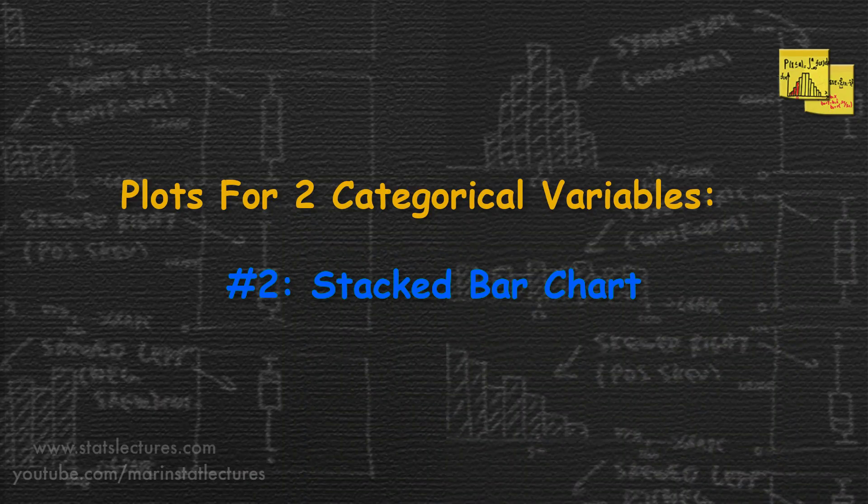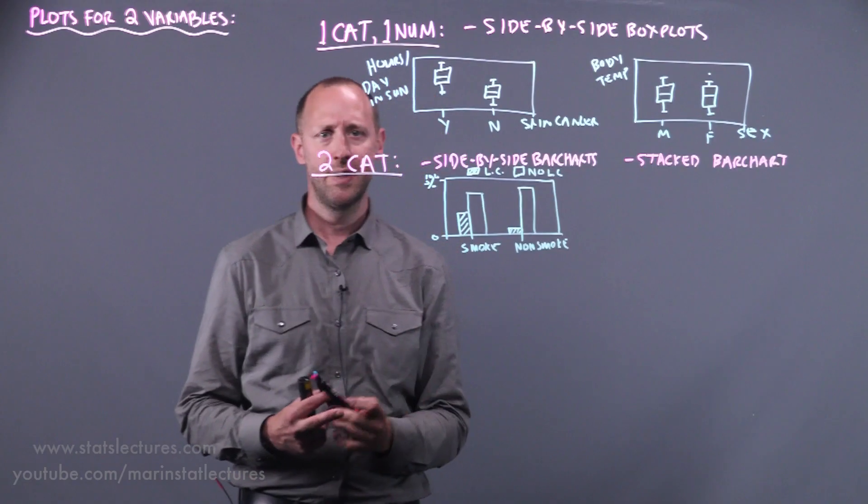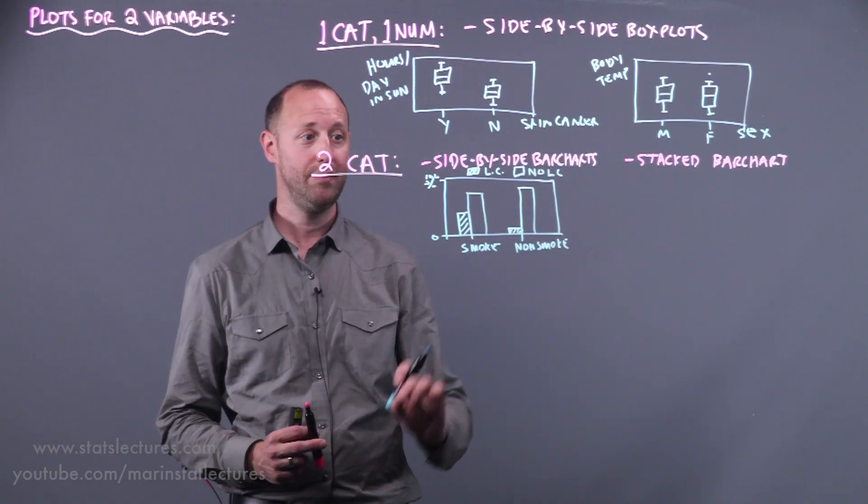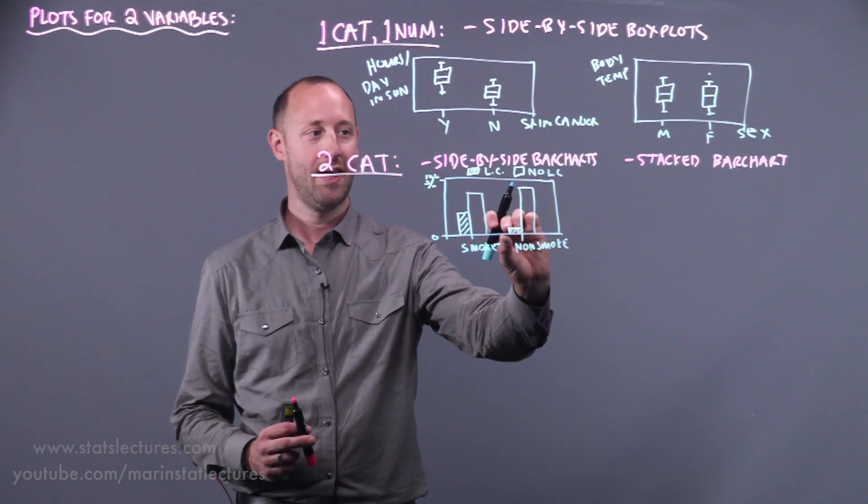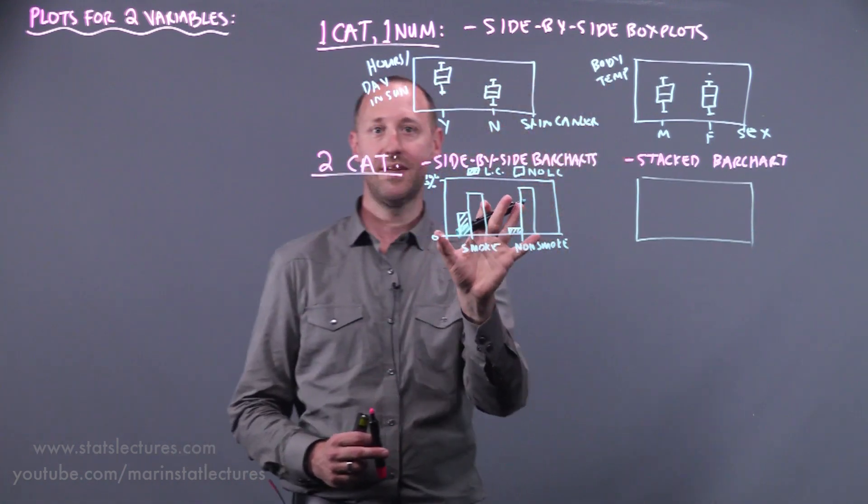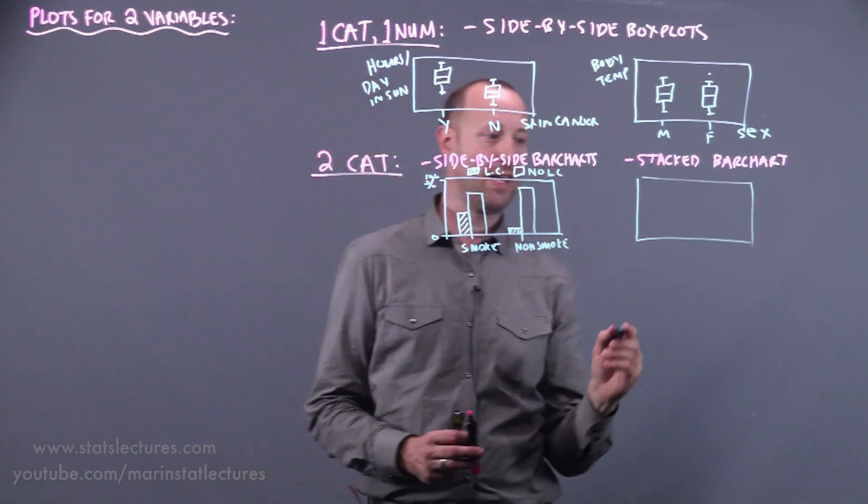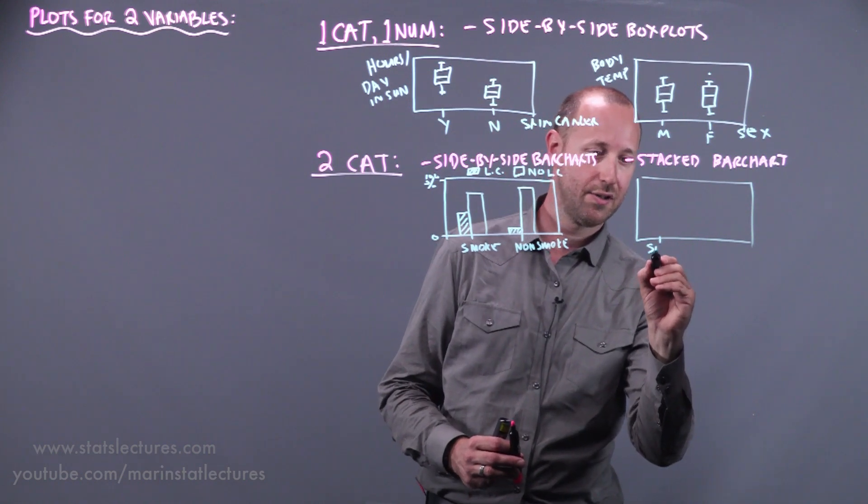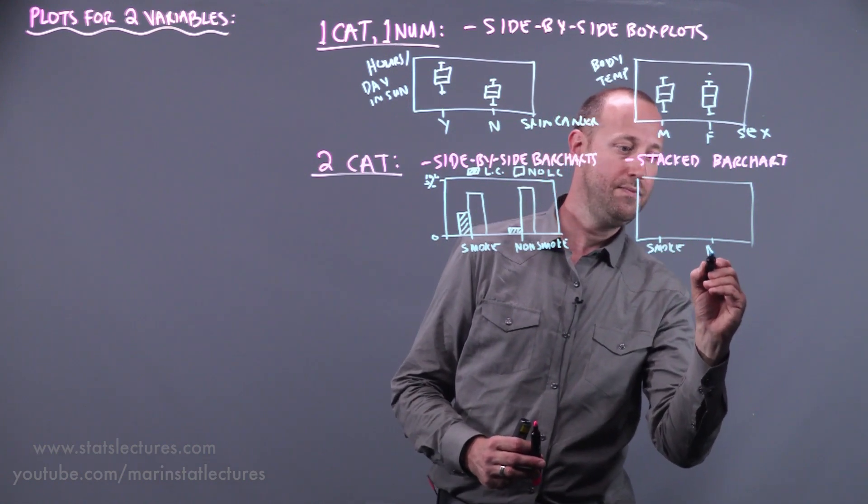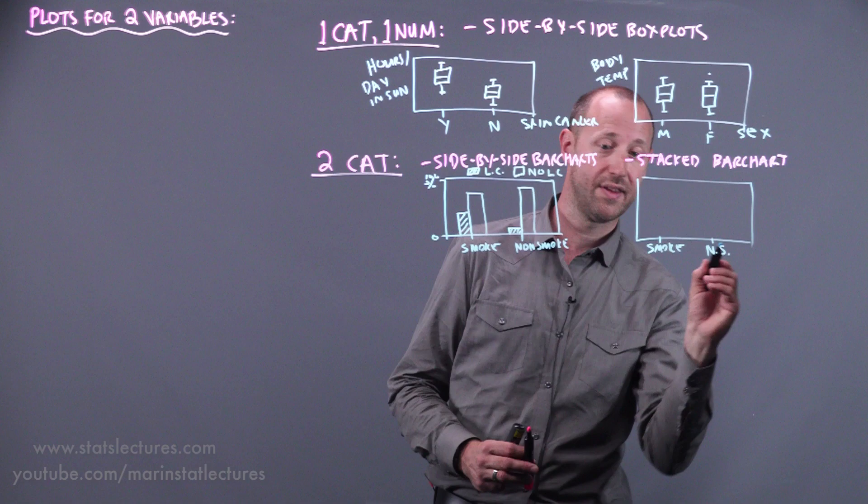Another version similar is a stacked bar chart, and it's pretty similar to the side-by-side bar chart, except we take these and we stack them on top of each other. So taking the exact same set of data but looking at it as a stacked bar chart, here's the smoking group, here's the non-smoking, I'll just abbreviate that NS.